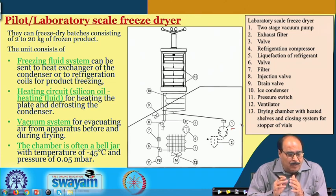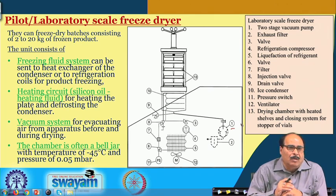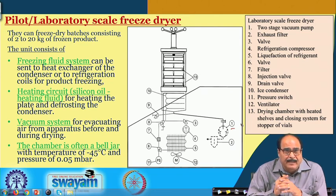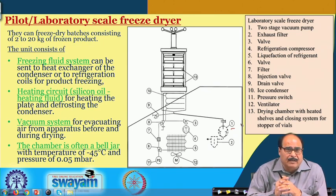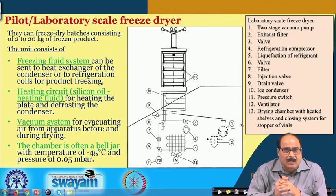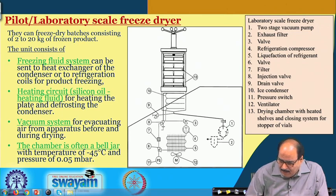The system consists of a freezing fluid system that can be sent to a heat exchanger of the condenser or to the refrigeration coil of the product for freezing. The heating circuit normally uses silicon oil heating fluid for heating the plate and defrosting the condenser. It also has a vacuum system for evacuating air from the apparatus before and during the drying process. The chamber is often a bell jar with a temperature of minus 45 degrees Celsius and pressure of about 0.05 mbar.